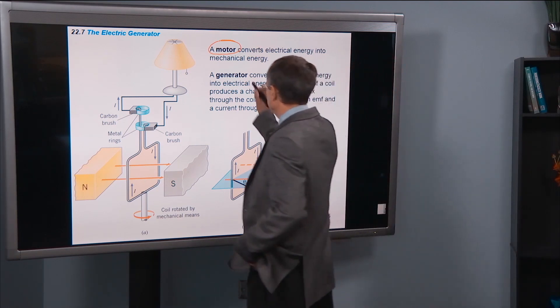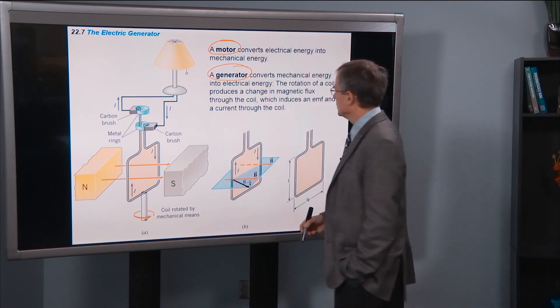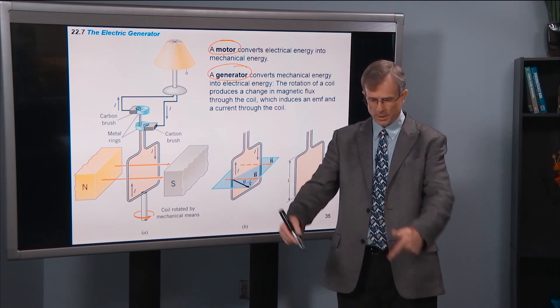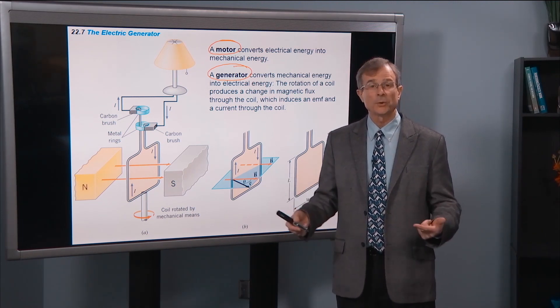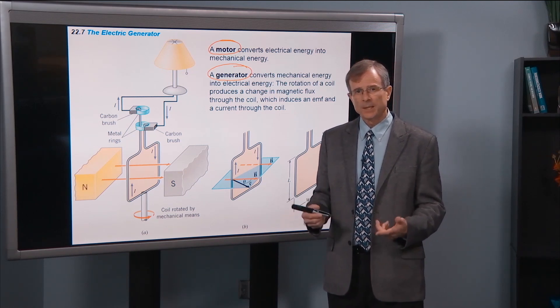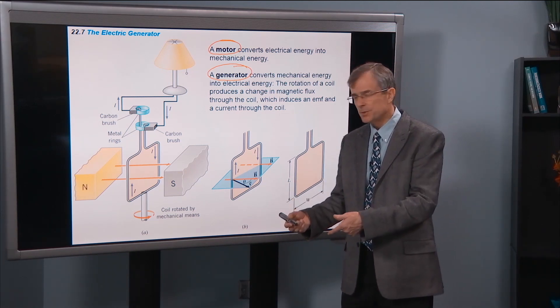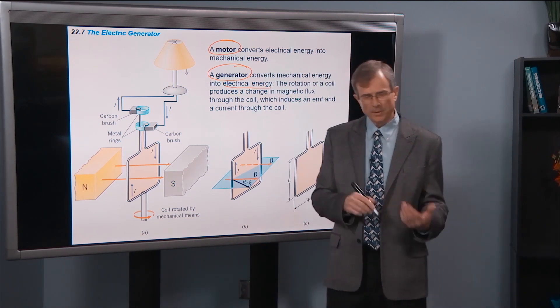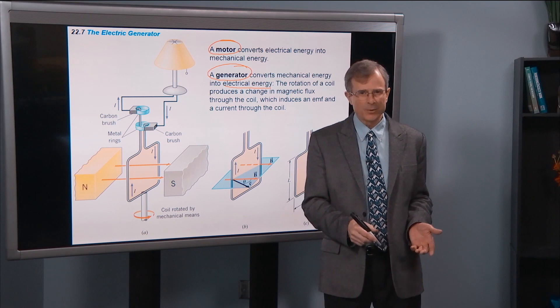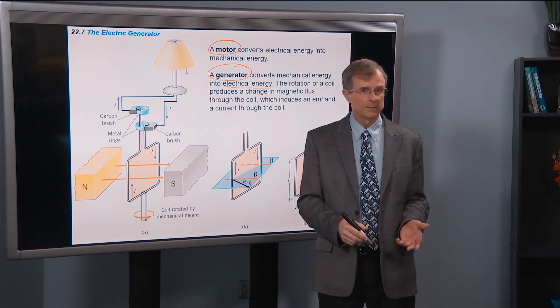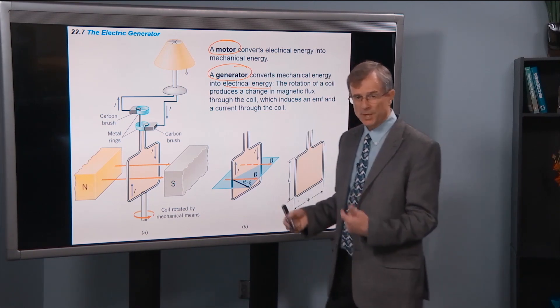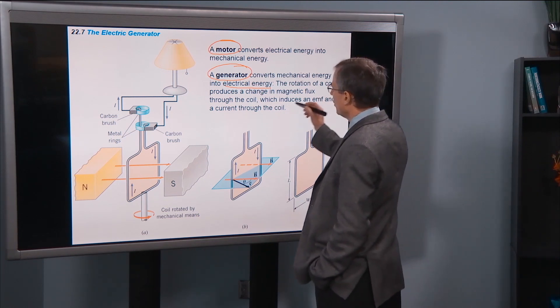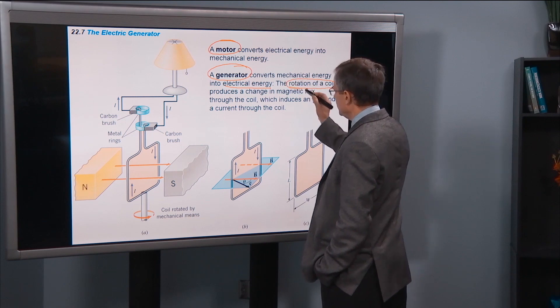A generator does just the opposite. It converts mechanical energy, such as the motion of the wheels in your car, and converts that mechanical energy into electrical energy. So what you want with your alternator in your car is to charge a battery. You need some current to charge it, and it's your generator slash alternator that does that.